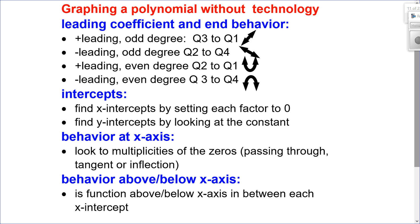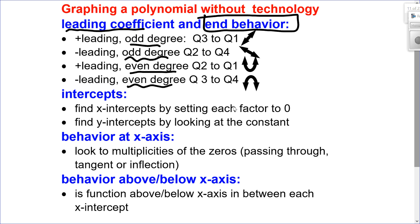Let's look at how to graph without technology. The leading coefficient and the degree help with end behavior — positive or negative leading coefficient, and odd or even degree, each gives a different end behavior pattern. Look for your x and y intercepts. For the behavior at the x-axis, we use sign analysis — determining whether the graph is above or below the x-axis in between the x-intercepts. And the multiplicities tell us: am I passing through, touching and turning around, or having a curve change?